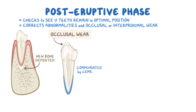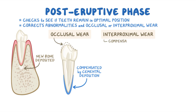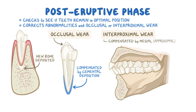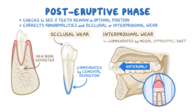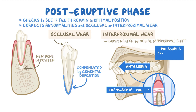Occlusal wear is compensated by cemental deposition around the apex. Whereas interproximal wear, which is the wearing of the contact surface between the teeth, is compensated by a process called mesial or proximal shift. The mesial shift is brought upon by a combination of forces: the anteriorly directed force generated by the teeth when in occlusion, the pressure exerted by transseptal fibers of the PDL to keep neighboring teeth in contact, and the pressures exerted by surrounding soft tissue like the tongue and cheeks.